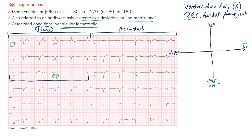Look at the QRS complexes in lead I and determine whether they are mostly positive or negative. Draw a baseline — in this example the complex is almost isoelectric, meaning equal positive and negative, but it is slightly negative. If something is isoelectric it falls perpendicular to the lead line. If positive it lies toward the positive side; if negative, it lies toward the negative side.